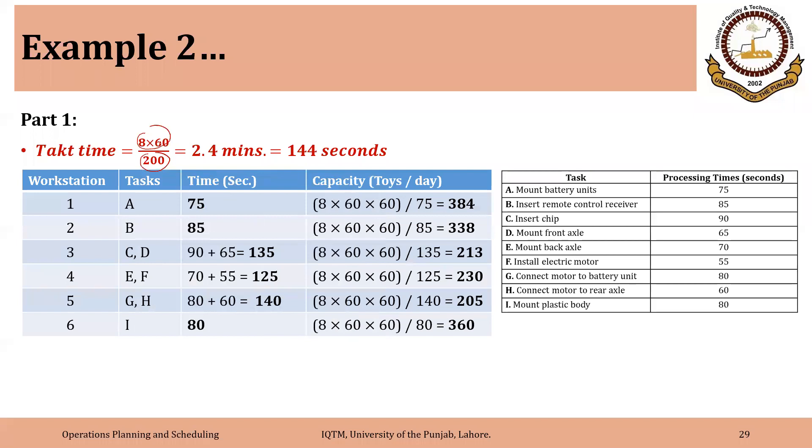So we can combine the tasks and there could be different possibilities. So one of them is that at workstation 1, we are having just task A, 75 seconds. Workstation 2, only task B, 85 seconds. Then we are combining the tasks C and D at workstation 3. So time will be 135 seconds, C and D.